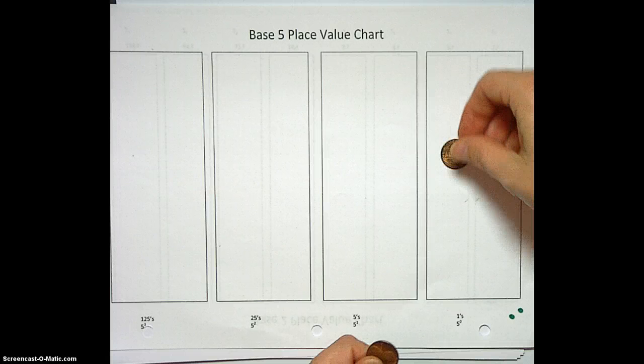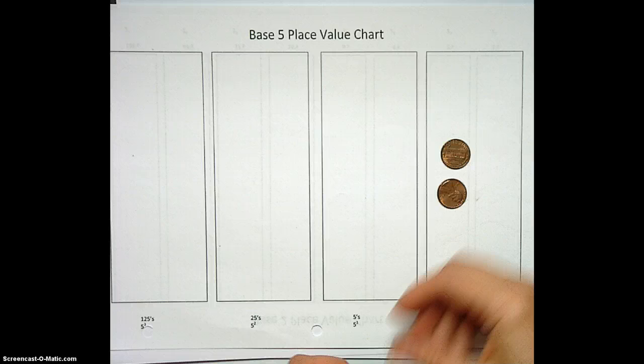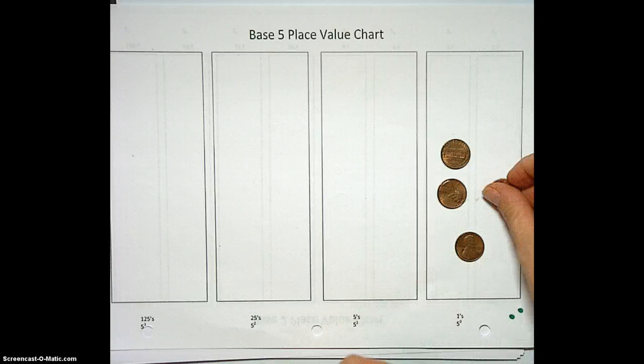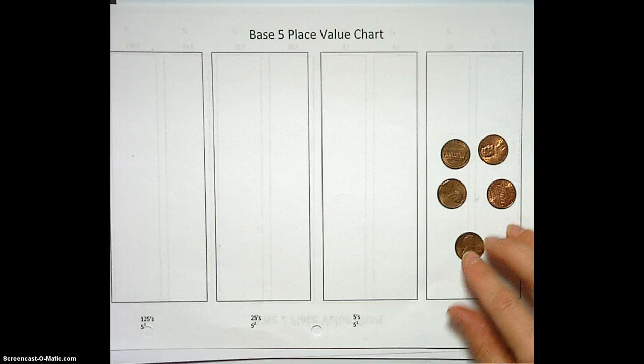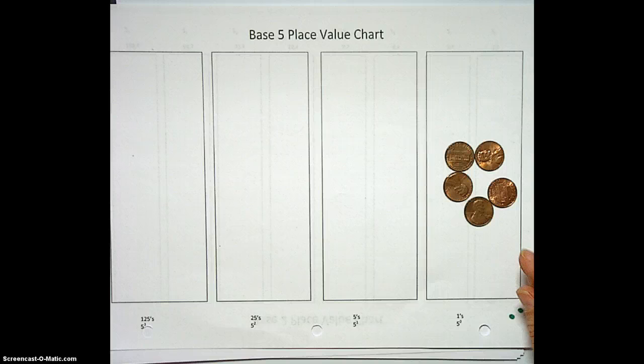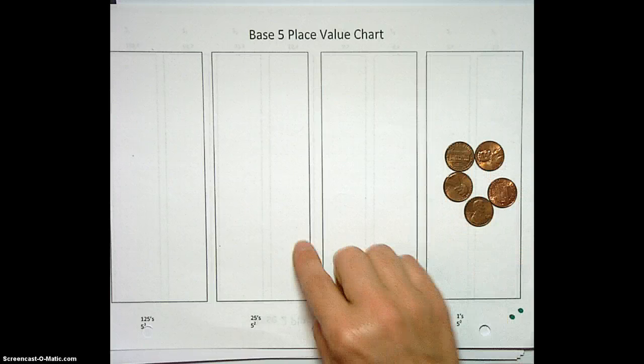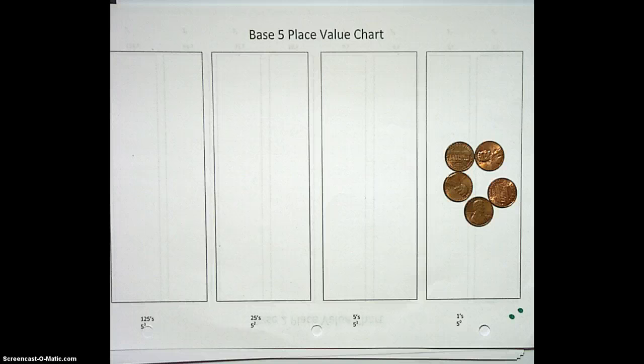So we're going to count 1, 2, 3, 4, and then when we put down our fifth penny, if we're counting in base 5, we're not allowed to have 5 of anything in one place value box. What do we do when we get 5 coins? Well, we would exchange them. What would we exchange our 5 pennies for? A nickel.